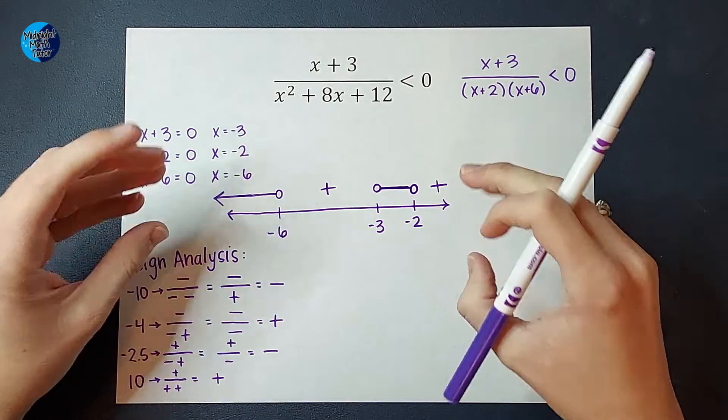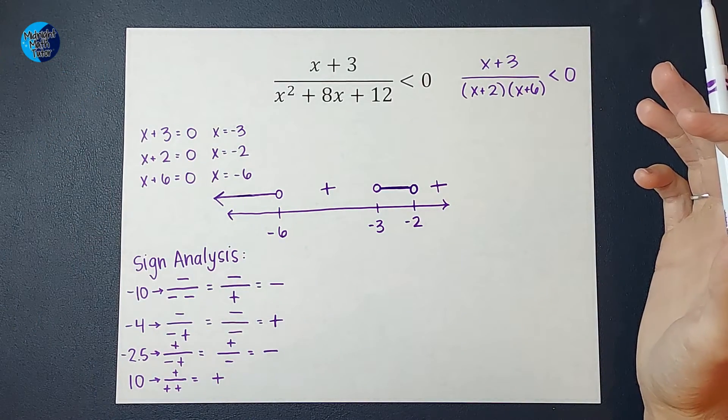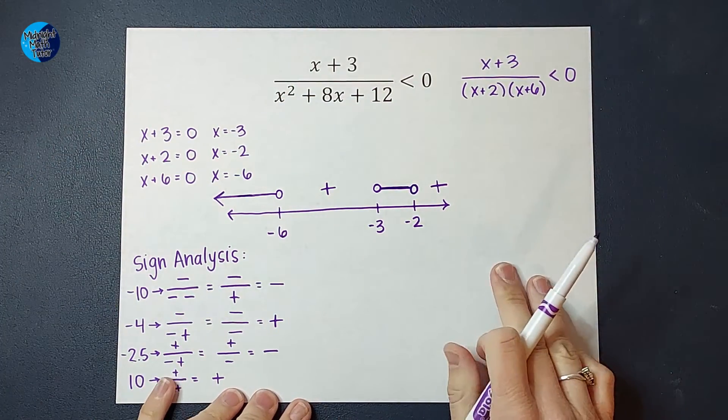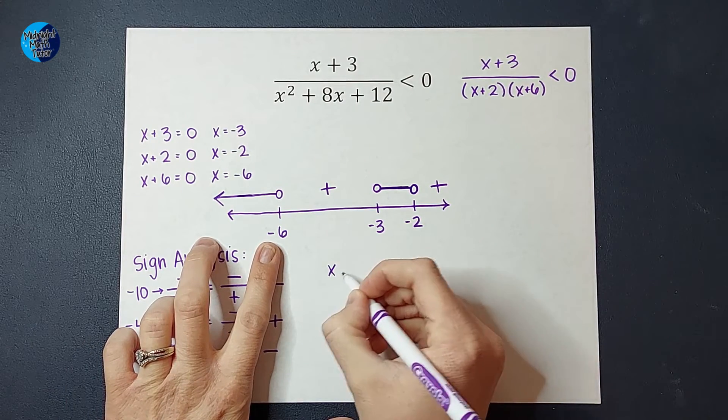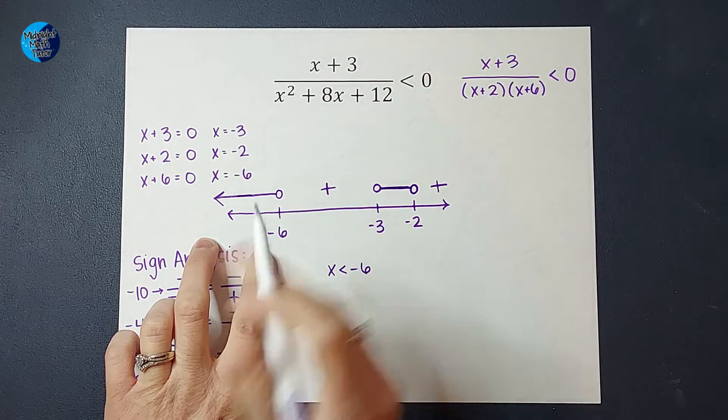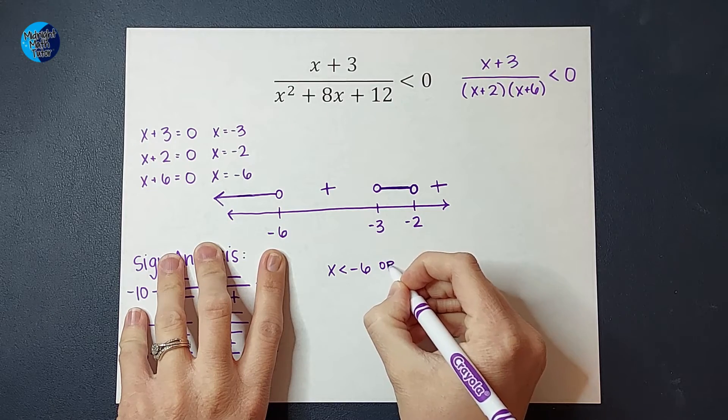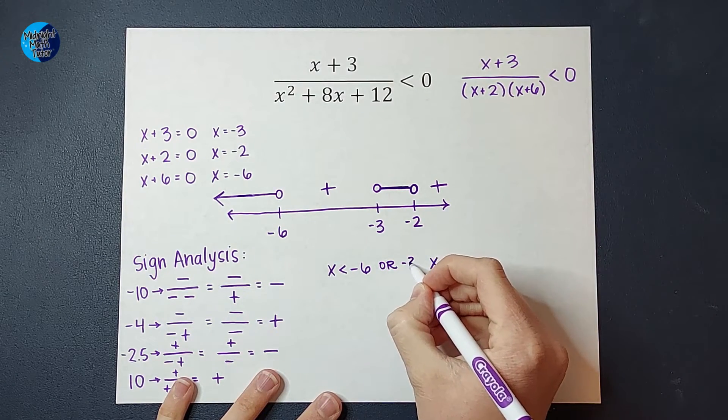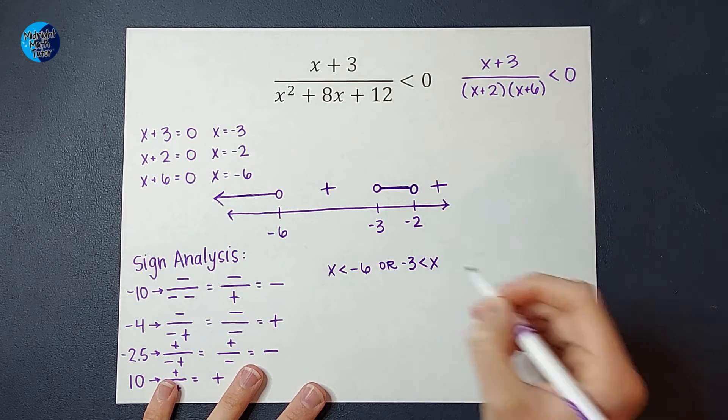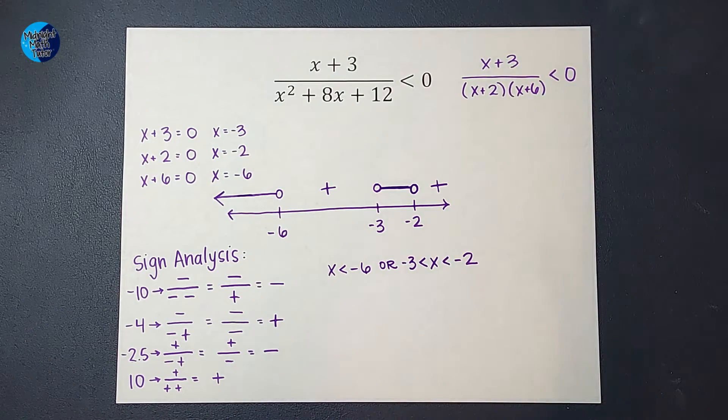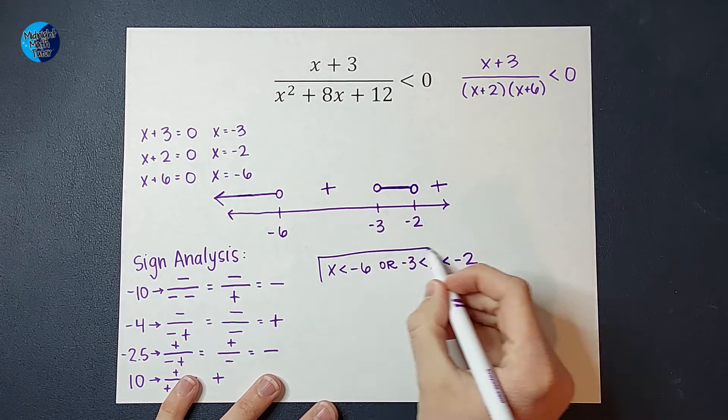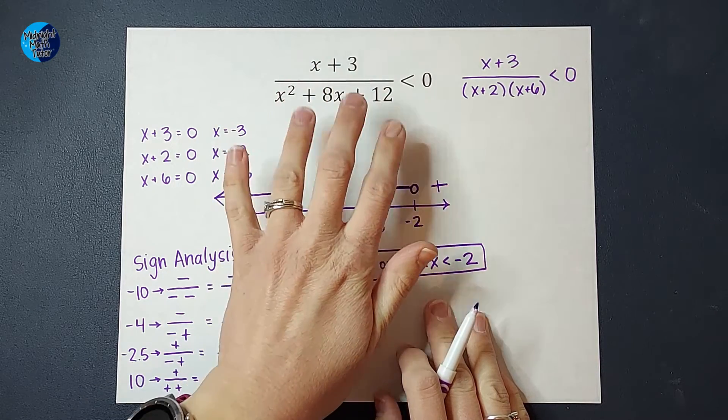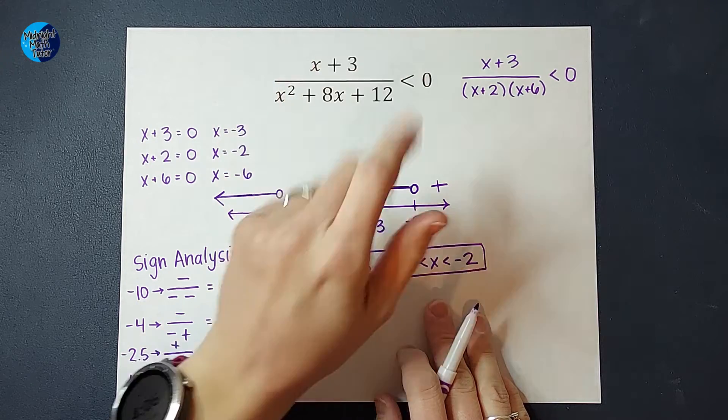So this graph represents my answer, but your teacher probably doesn't want you just to turn that in as your answer. They probably either want it in inequality form as your answer or interval notation. So if I were to do this as inequalities, I would say x can be less than negative 6, x not equal to, because that's an open circle, or x can be, and we're trying to represent this area right here. So we've got our negative 3, and x is bigger than the negative 3 and less than the negative 2. Not equal to, again, because they're open circles.